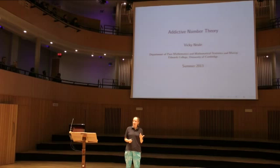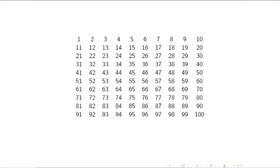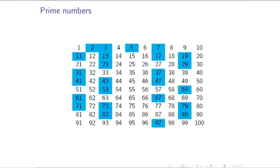I seem to have given myself the job of trying to persuade you that number theory can be addictive, so let's see how I get on. What is number theory all about? For me, number theory is all about the whole numbers — maybe particularly the positive whole numbers. I'm interested in looking for properties of the whole numbers, trying to find something about the underlying structure. What are the properties of the integers that we can look for and explain?